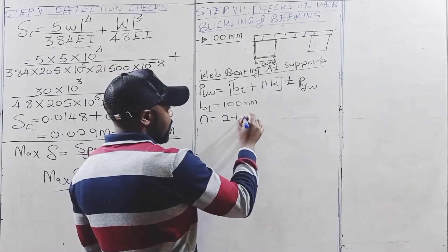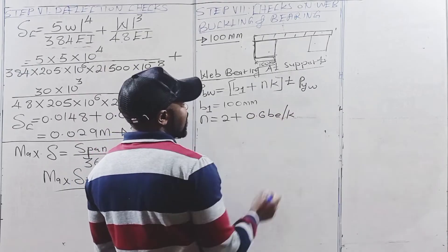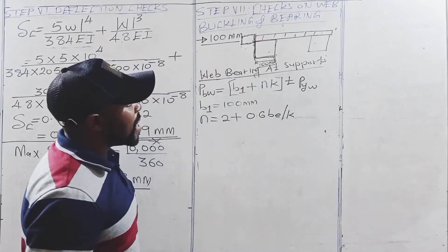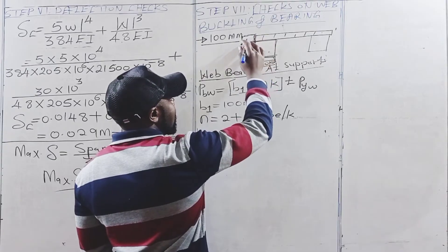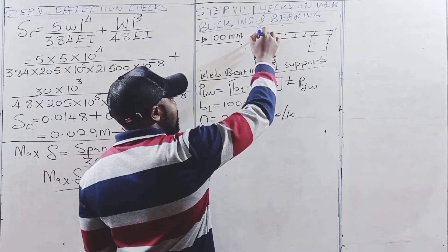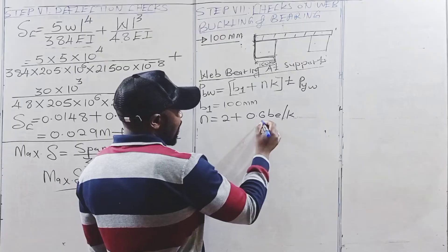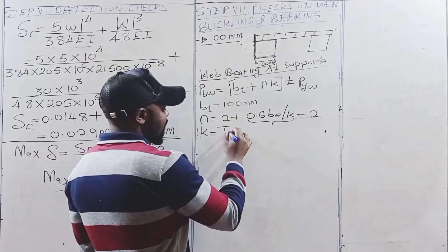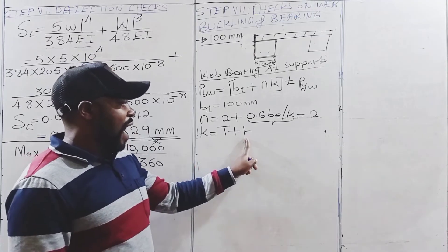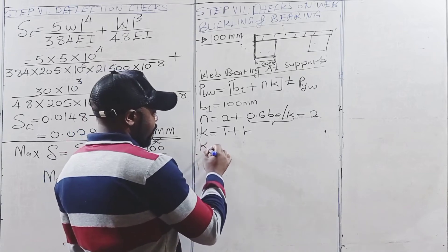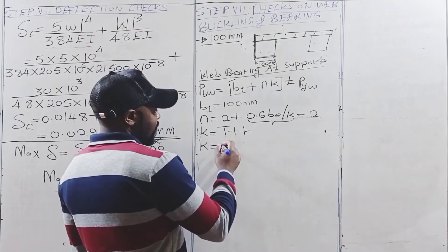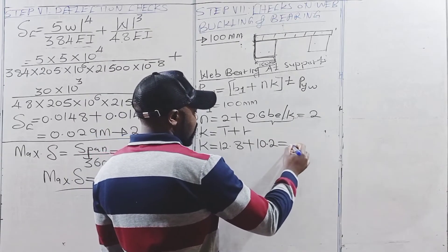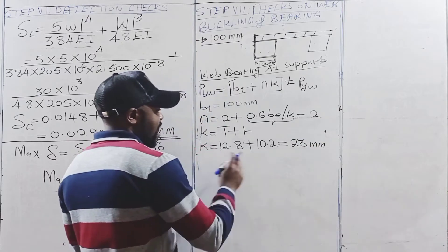N is given by 2 + 0.6 × BE over K. BE is the distance from the end of the bearing to the end of the beam member. Since our bearing is flush with the beam, BE is 0, making that term 0 and giving us N equal to 2. K is given by T plus R, where T is the flange thickness and R is the root radius. From Appendix B, the flange thickness is 12.8 mm and the root radius is 10.2 mm, giving K equal to 23 millimeters.